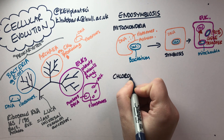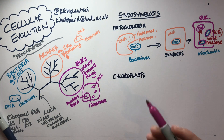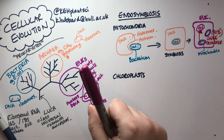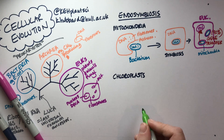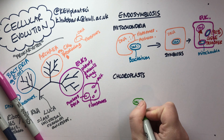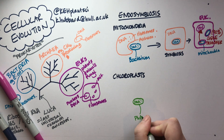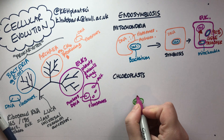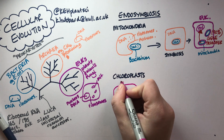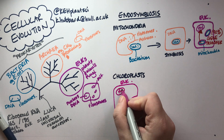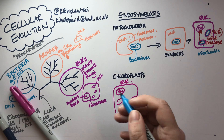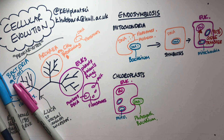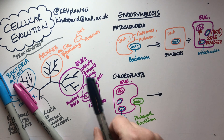The story of the chloroplasts is very similar — it's another endosymbiotic event. Not all cells have chloroplasts, so this only happened in a subset of cells. One day another bacterium was swimming along doing its own thing — this one was photosynthetic — and it was engulfed by another cell, which we know had to have been a eukaryotic cell that already had a nucleus and crucially already had mitochondria.